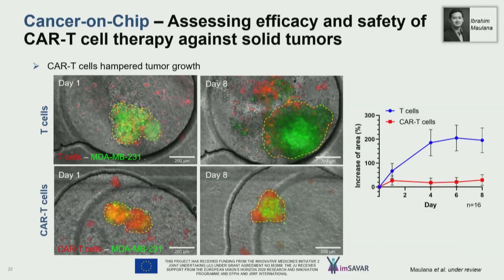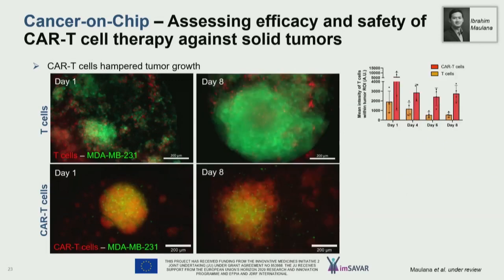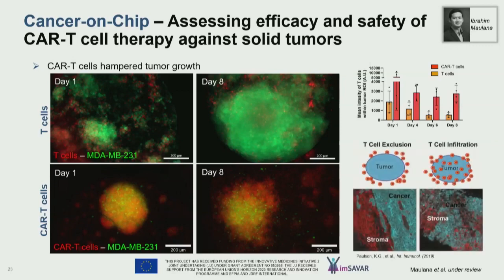Looking at the T cells versus CAR T cells directly: the T cells, although some are recruited, stay on the outside — they don't really attack the tumor spheroid. There's a zone around it where T cells don't go. In the case of the CAR T cells, they really stay on and get into the tumor. That's something you also see in vivo, where you have a T cell exclusion zone in many tumor types.